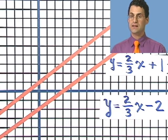So parallel lines have the same slope. And conversely, if two lines have the same slope, they must be parallel. Not a big deal. It's parallel lines, same slope.